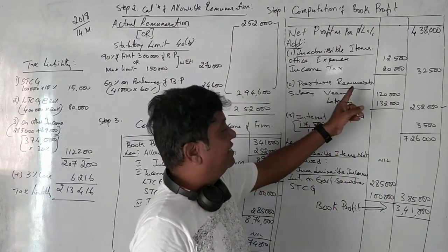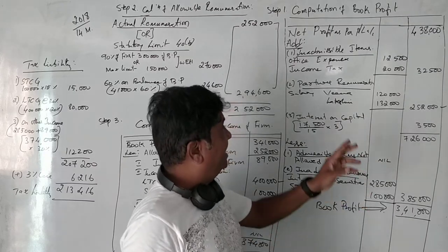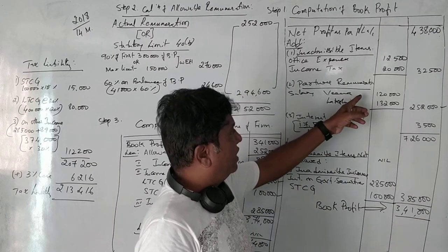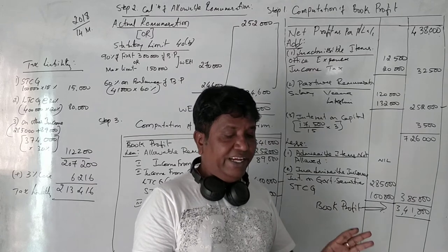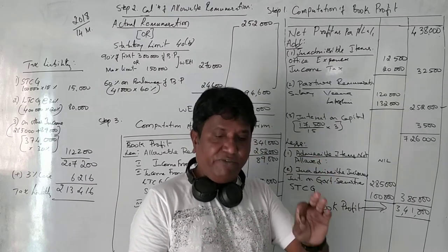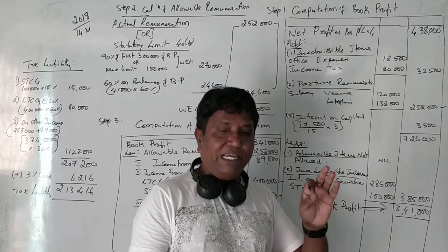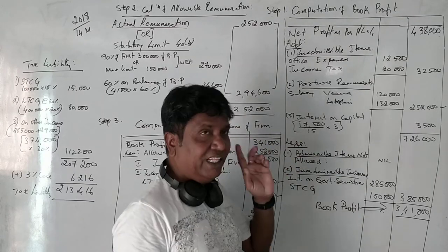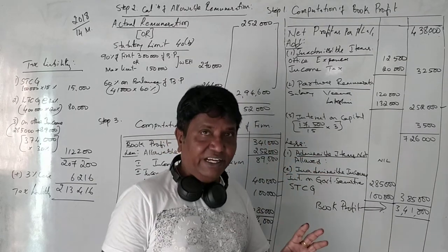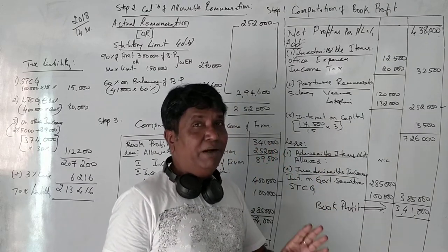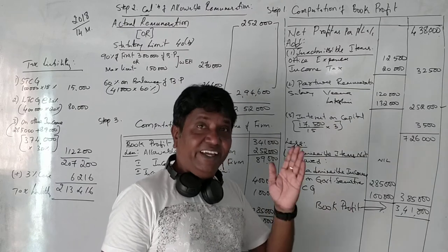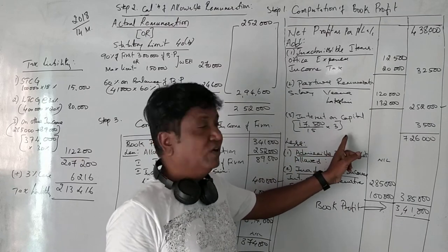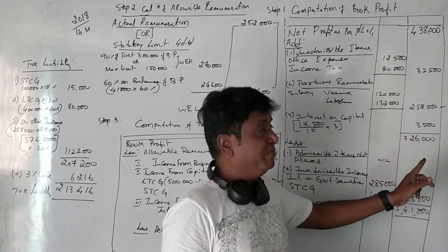Next, partners' remuneration: salary to Veena is Rs. 1,20,000 and salary to Laxmi is Rs. 1,32,000, totaling Rs. 2,52,000. Interest on capital of Veena at 15% is Rs. 7,500 and of Laxmi at 15% is Rs. 10,000, totaling Rs. 17,500. Since only up to 12% is allowed as a business expense, the excess 3% is inadmissible and taxable.